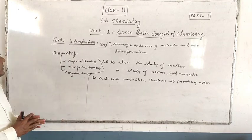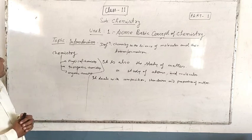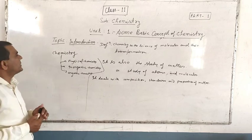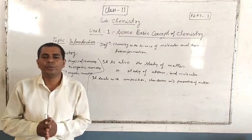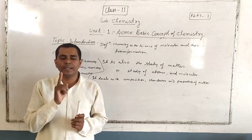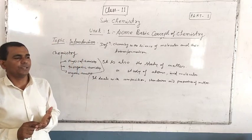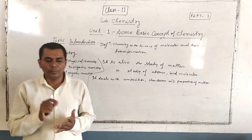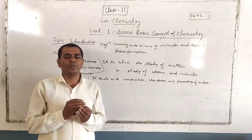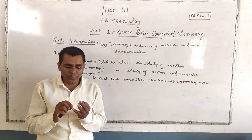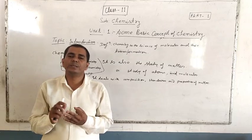Now, branches of chemistry. There are many details. In class 10, you studied science as only one subject, which included chemistry, physics, and biology. Science is the main subject with parts: some parts physics, some parts chemistry, some parts biology.